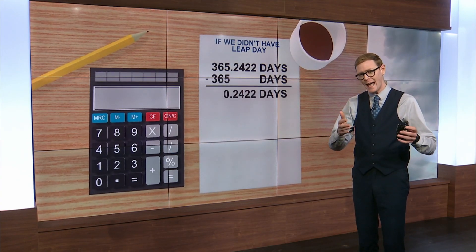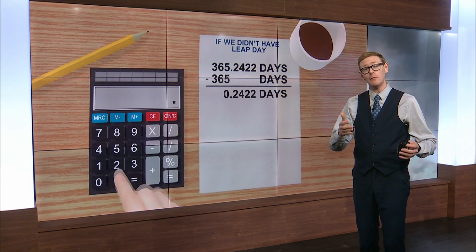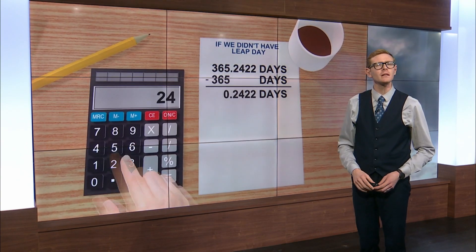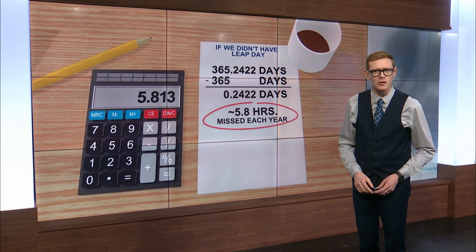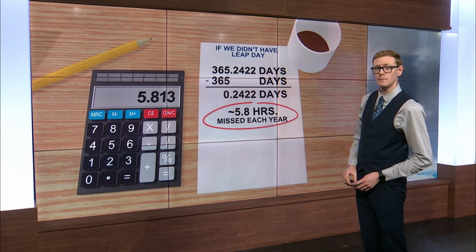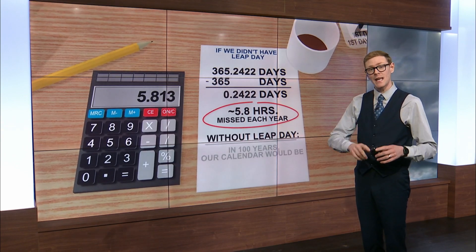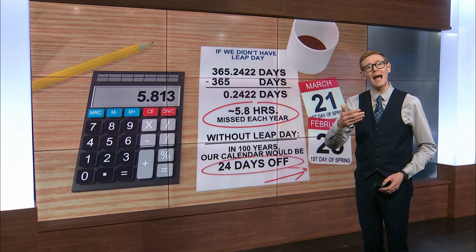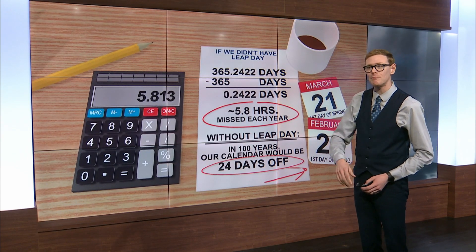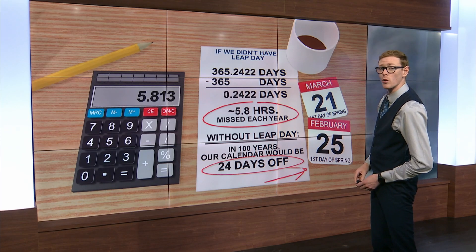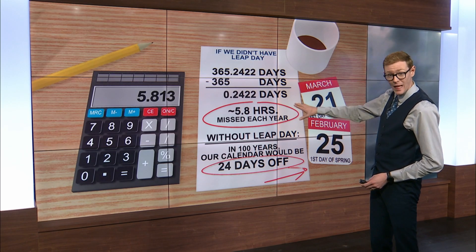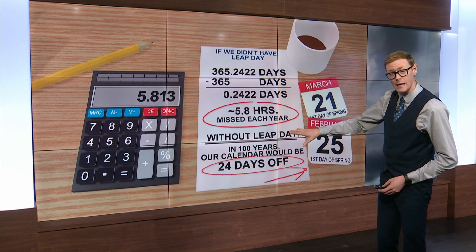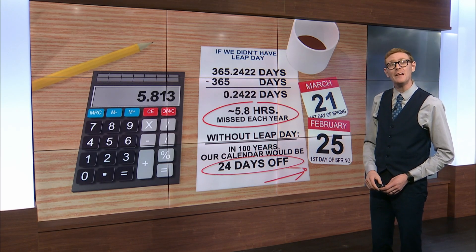If we didn't have leap day, we would miss nearly six hours every year, which means in 100 years our calendar would be off by 24 days. That would put our spring equinox in February.